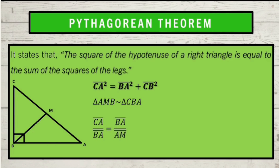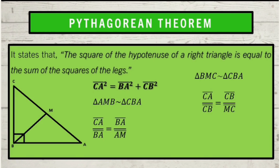Next, let us get the proportion of triangle BMC and triangle CBA and determine the corresponding sides. The first one is side CA, so we have side CA is to side CB. The corresponding side gives us side MC. Therefore, side CA is to side CB equals side CB is to side MC. The reason for this is the special properties of right triangles.